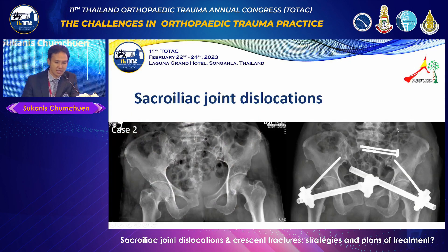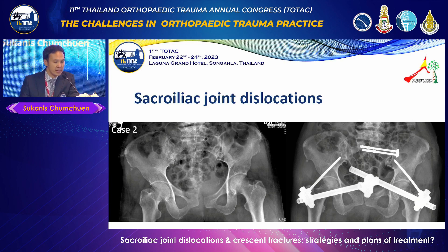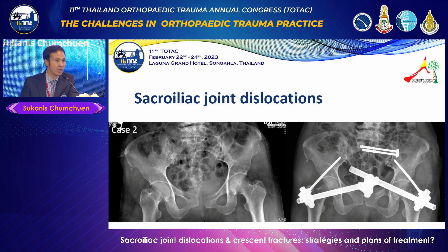For the second case, this is a 76-year-old lady with an APC injury — widening of the pubic symphysis anteriorly and widening of the SI joint on the left side. So we just put a screw and anterior fixation for augmentation. That's all. She did quite well after the fixation.